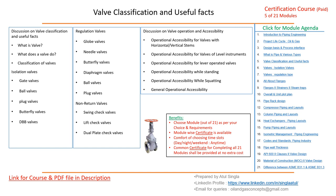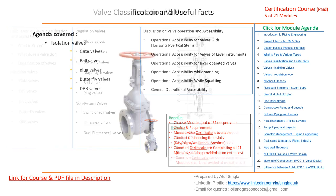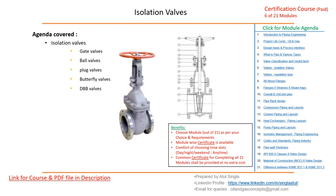Under regulation valves: globe, needle, butterfly, diaphragm, ball, and plug valves will be discussed. Under non-return valves: swing, lift, and dual-plate check valves will be covered. Along with classification, operational and accessibility aspects will be discussed — how valves are placed horizontally or vertically, lever-operated valves, and general operational accessibility factors.